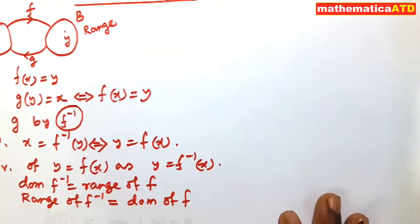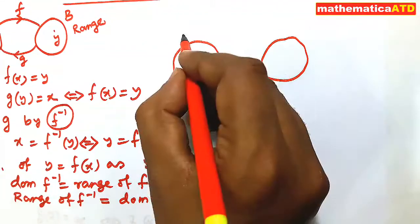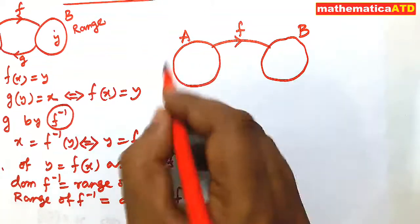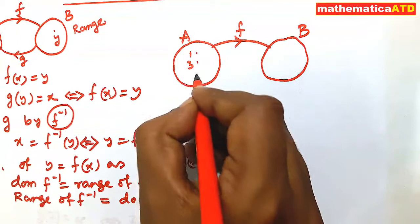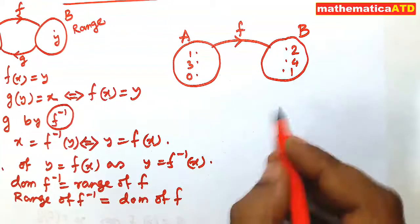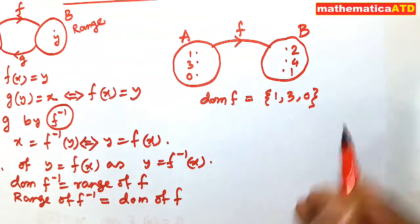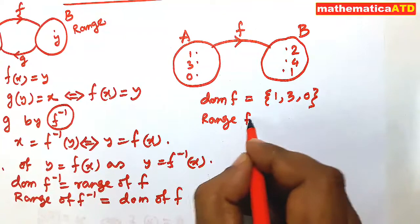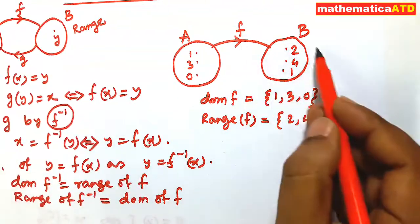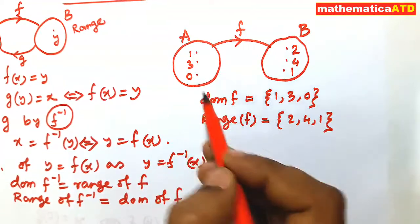We shall give some examples. Let us consider two non-empty sets, respectively A and B. There is a function from A to B. In the domain, there are three points: 1, 3, and 0. And in B there are three points: 2, 4, and 1. So the domain of f is equal to {1, 3, 0}, and the range of f is equal to {2, 4, 1}.